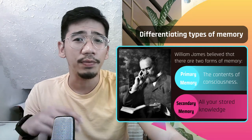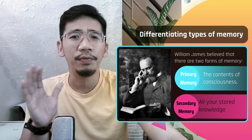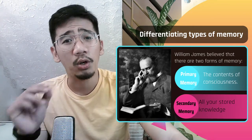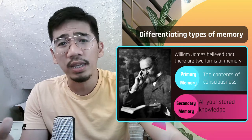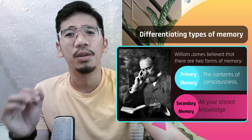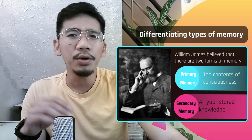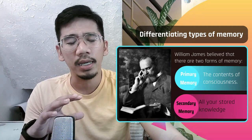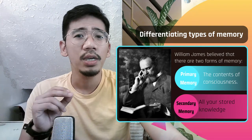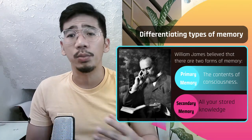One American philosopher and psychologist, however, believed in two types of memory. William James proposed the following distinction: you have primary memory, which is the contents of your consciousness or what you are thinking about right now. If I ask you to imagine the most beautiful person in the world, primary memory contains the image of that person. And then you have secondary memory, which stores all your knowledge, most of which you aren't currently thinking about.